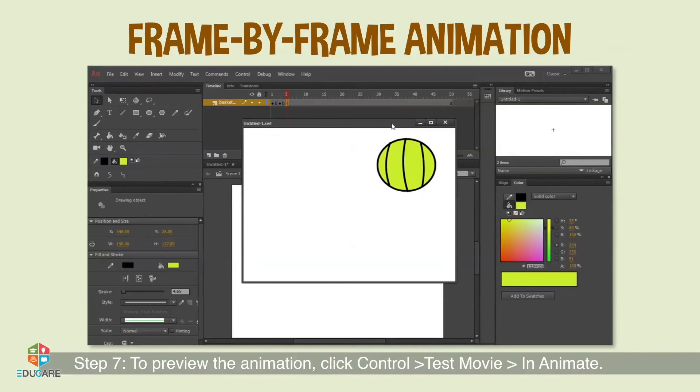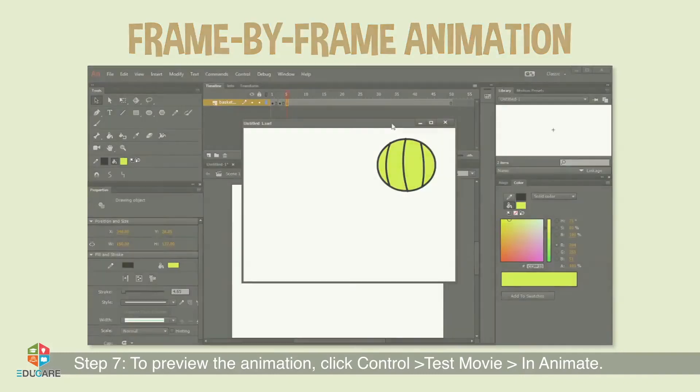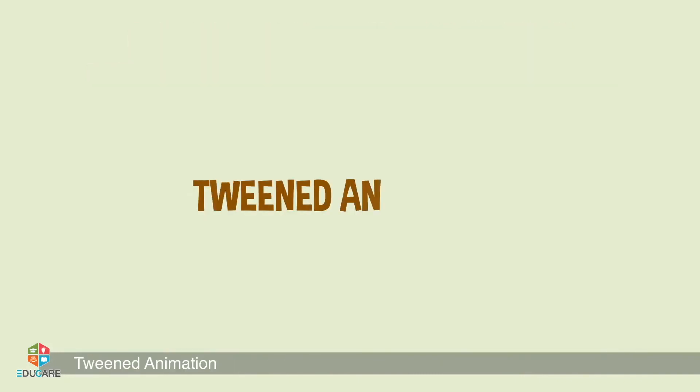Step 6: Repeat the above steps 5 to 6 times to insert new frames. Step 7: To preview the animation, click Control, Test Movie in Animate.